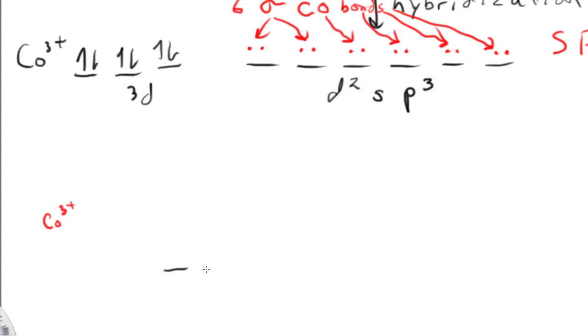There will be three orbitals of lower energy. And again, we're talking about the 3D here. And there will be two orbitals of higher energy. This difference right there we call delta or crystal field splitting energy.